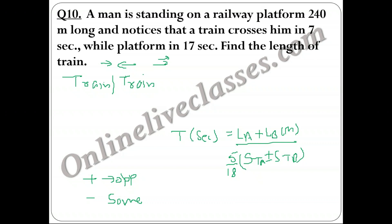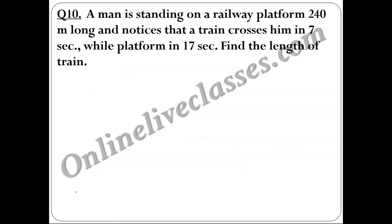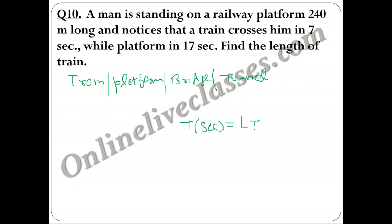Case 2 — Train crossing a Platform/Bridge/Tunnel: Time (seconds) = (Length of Train + Length of Platform) / (Speed of Train × 5/18). The platform is treated like a stationary train with zero speed. Kindly pause the video and note down this formula.